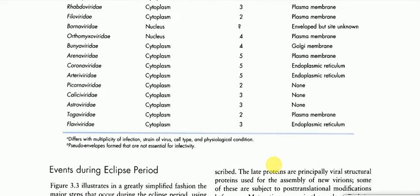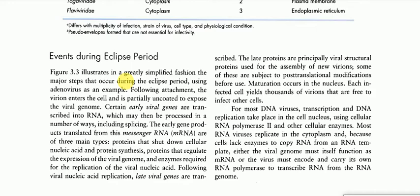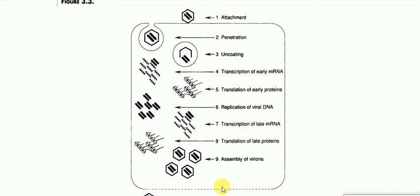Events during the eclipse period: Figure 3.3 illustrates in a greatly simplified fashion the major steps that occur during the eclipse period, using adenovirus as an example. Following attachment, the virion enters the cell and is partially uncoated to expose the viral genome. Early viral genes are transcribed into RNA, which may then be processed including by splicing. The early gene products are translated from mRNA and are of three main types: proteins that shut down cellular nucleic acid and protein synthesis, proteins that regulate expression of the viral genome, and enzymes required for replication of viral nucleic acid.